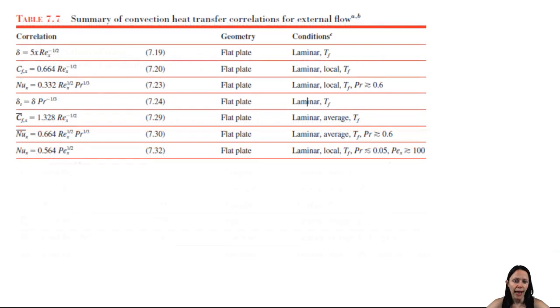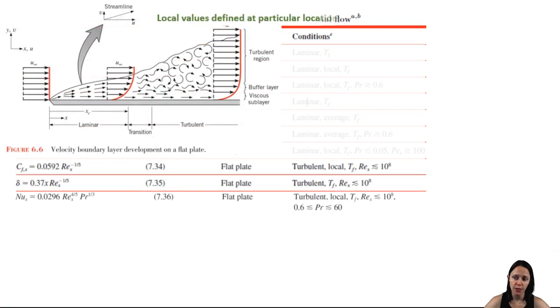All right, so we have a few local parameters for turbulent flow for the local friction coefficient, the relationship of the velocity and thermal boundary layers in turbulent flow, and the local Nusselt number. They haven't been obtained analytically but by experimentation. And just keep in mind that these are local parameters at specific locations in the regions of turbulent flow.